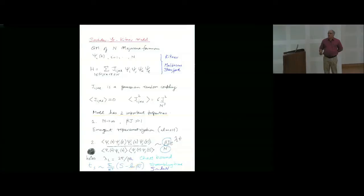It's a model of N Majorana fermions, random Hamiltonian, coupled as thus. There are two important properties of this model. In the large N limit and strong coupling, there is an emergent reparametrization symmetry. It's almost there, it's not exact.